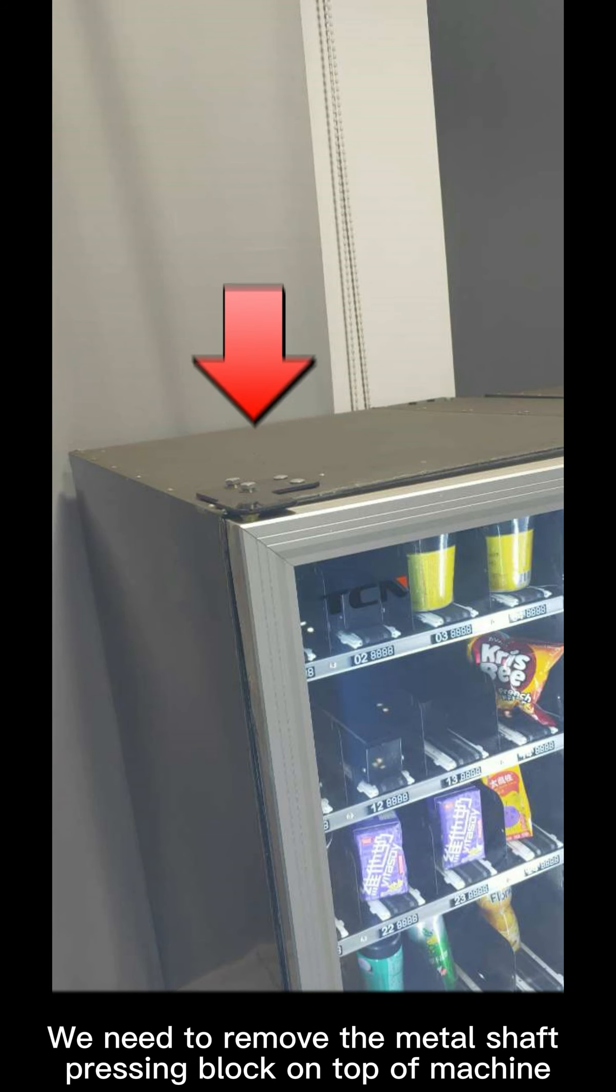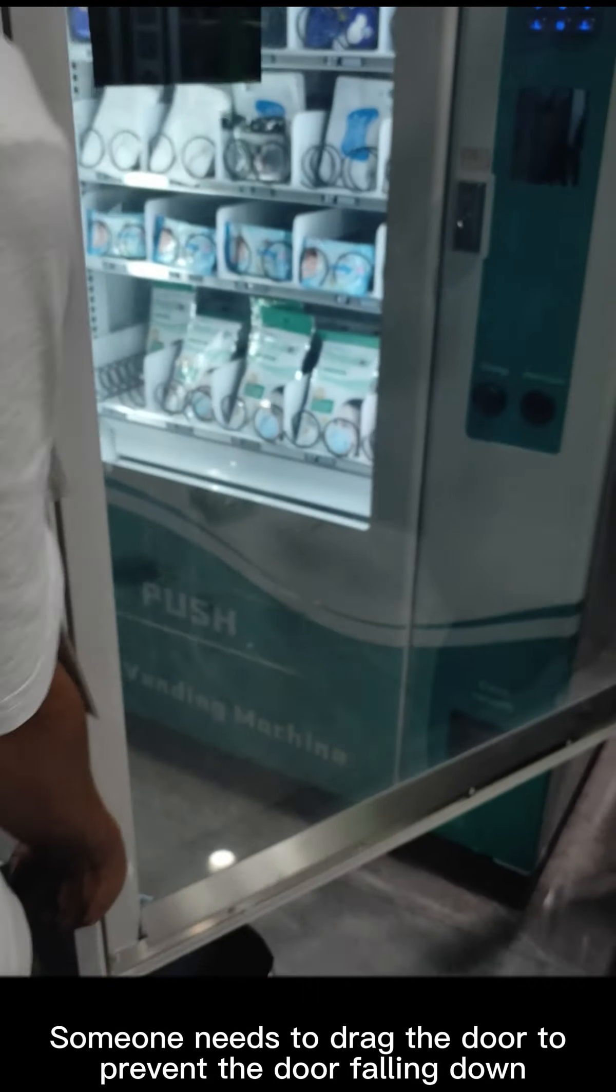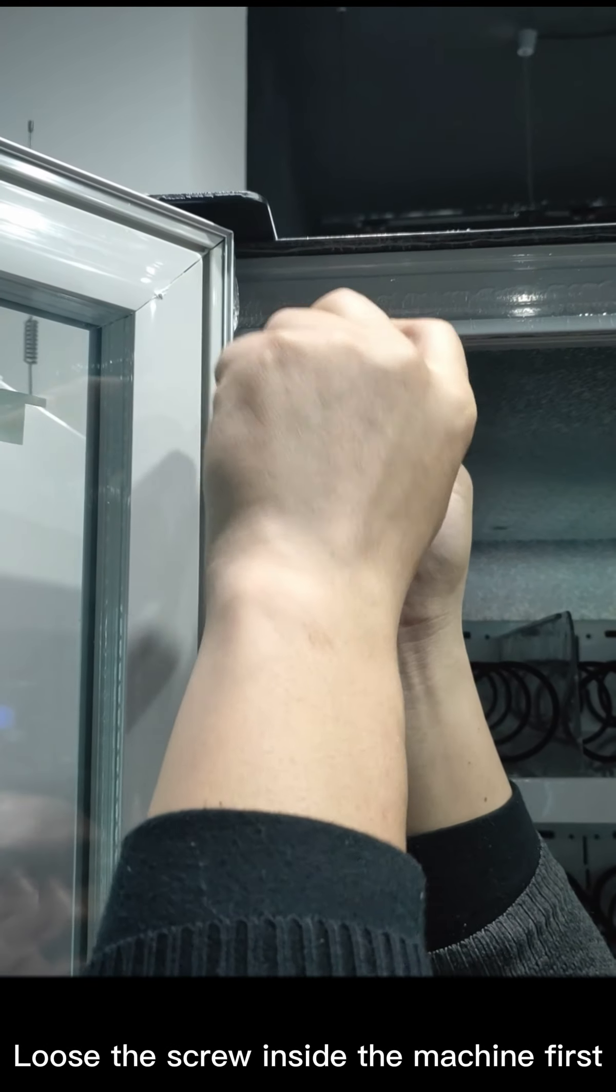Next, we need to remove the metal shaft pressing block on top of the machine. When removing the pressing block, someone needs to drag the door to prevent the door falling down.